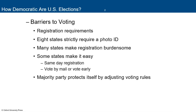The majority party protects itself by adjusting the voting rules. In Texas, that would be the Republicans. The margin between Republican and Democratic control in the Senate and in Congress was so thin that Republicans have tried to make it harder to vote and Democrats have tried to make it easier to vote. It has become a partisan action.